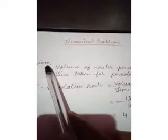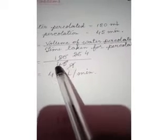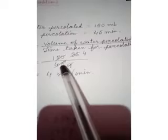For this solution, question 39 solution, you have to write the given quantities. First, volume of water percolated will be 180 ml. Time taken for percolation will be 45 minutes. Then you have to write the formula for percolation rate. It is equal to volume of water percolated divided by time taken for percolation. Putting the values 180 divided by 45, then you have to simplify it and you will get the solution as 4 ml per minute.